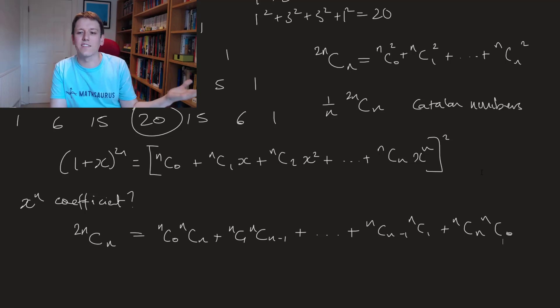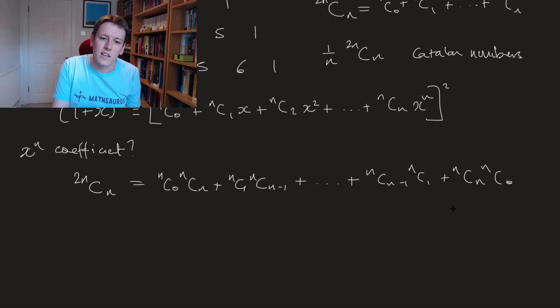So we've almost got the proof here because if you look at these terms on the right hand side well there's symmetry in Pascal's triangle right. You know n choose 0 is equal to n choose n, n choose 1 is equal to n choose n minus 1 etc.